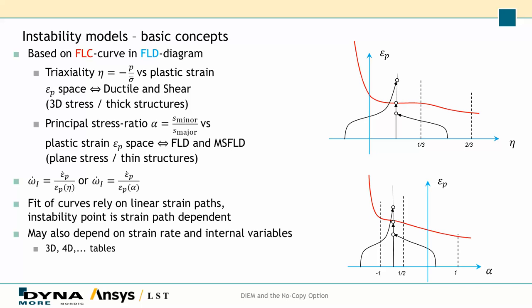The simplest way to input the data is with forming limit curves, but you can make it more complicated by supplying tables, or even 3D, 4D, or 5D tables — a rather novel feature. This allows you to incorporate dependence on strain rates and also arbitrary internal variables, making the instability model quite sophisticated in order to improve results.